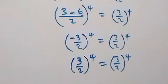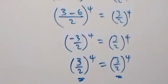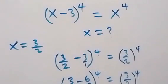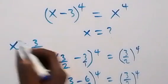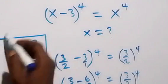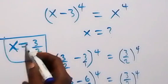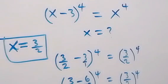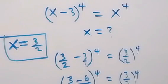The left-hand side equals the right-hand side, so x equals 3 over 2 satisfies the given problem. When we check the complex solutions as well, they also satisfy the problem. Thank you for watching — subscribe to my channel and turn on the notification bell. See you next class, bye for now.